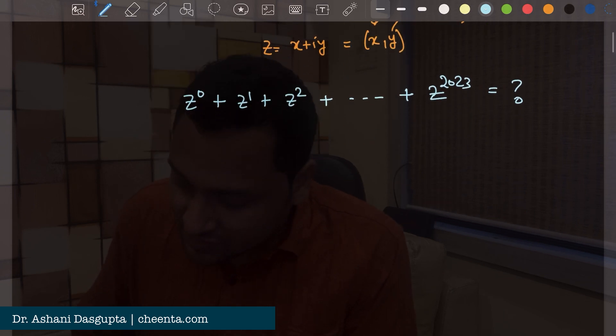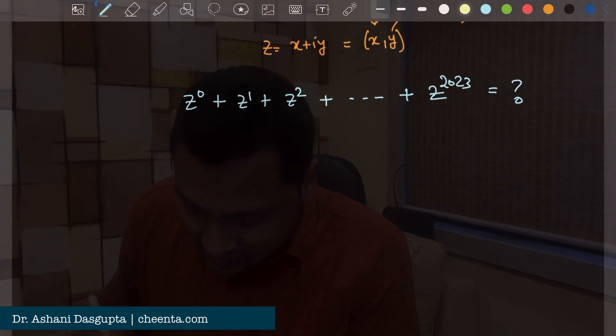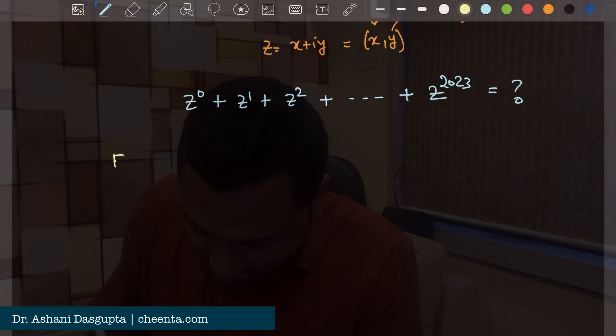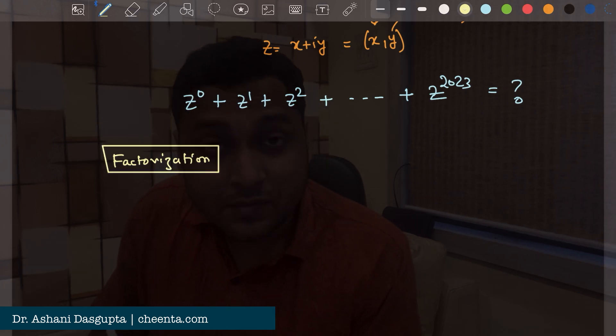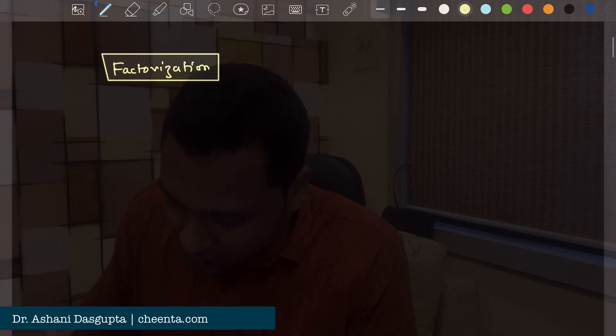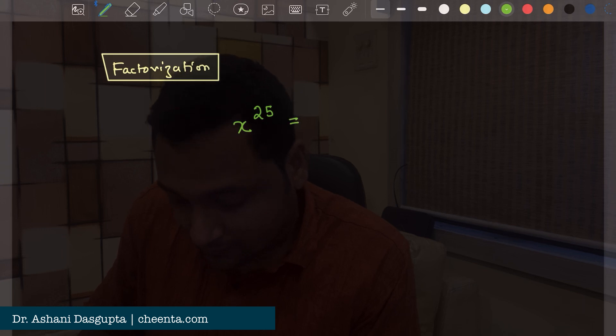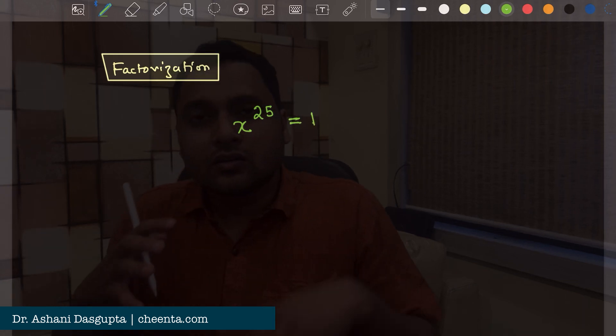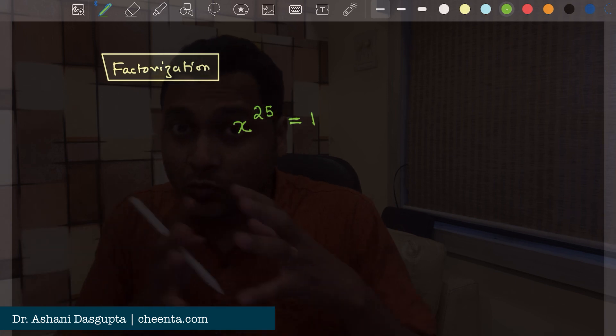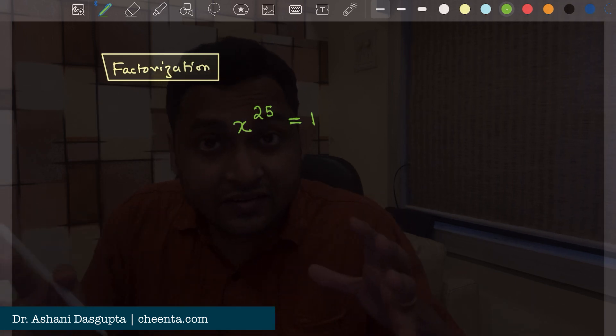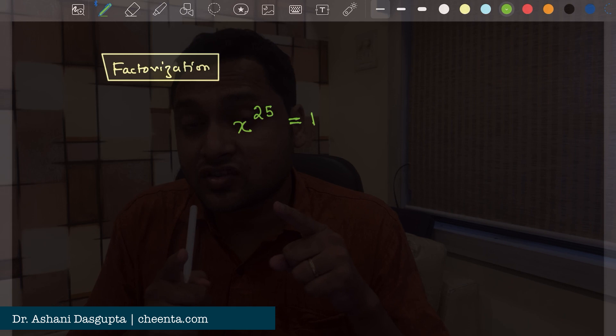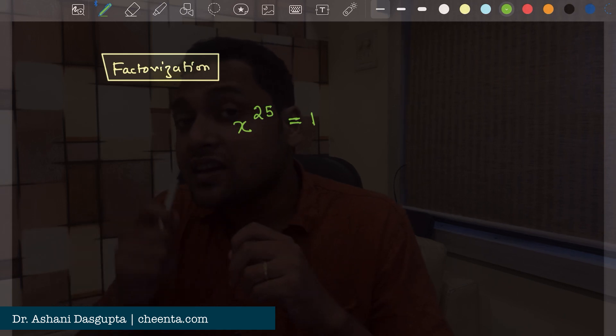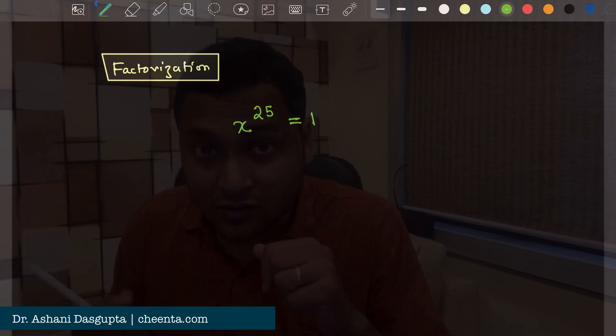Now at the center of this problem there is a factorization from algebra that is very powerful. So let me first talk about that. So if you look at the equation x to the power 25 equal to 1, one way to solve it is to take the 1 to the other side and factorize it. And this is a very important factorization that you can use in other problems as well.